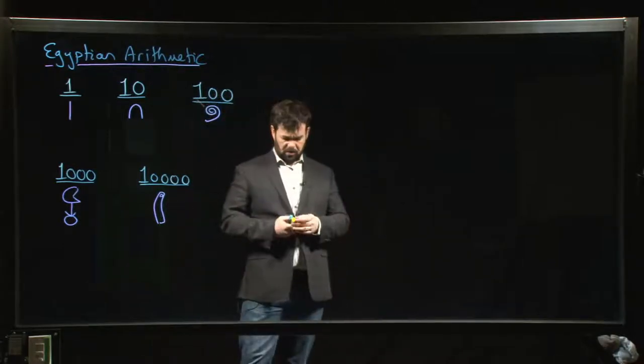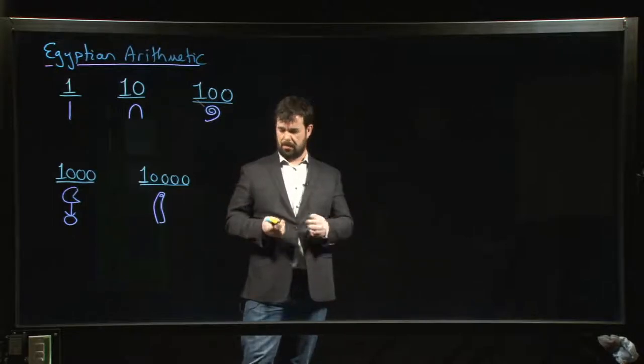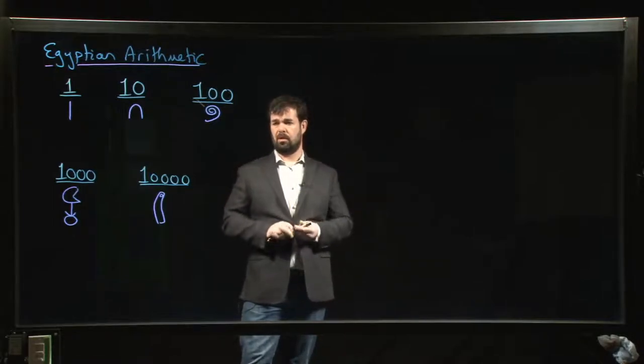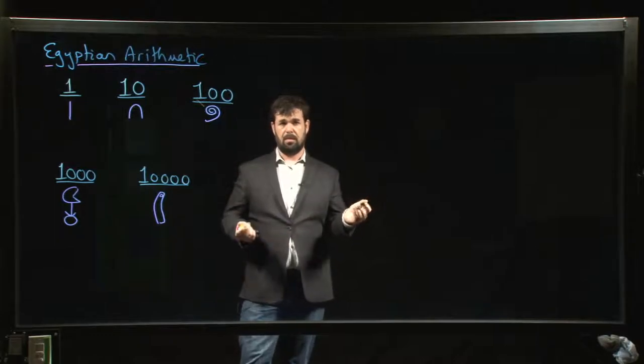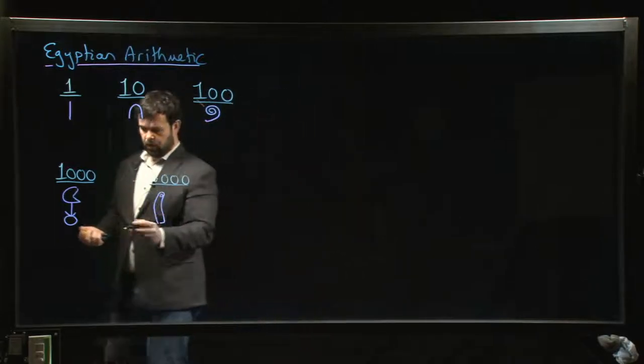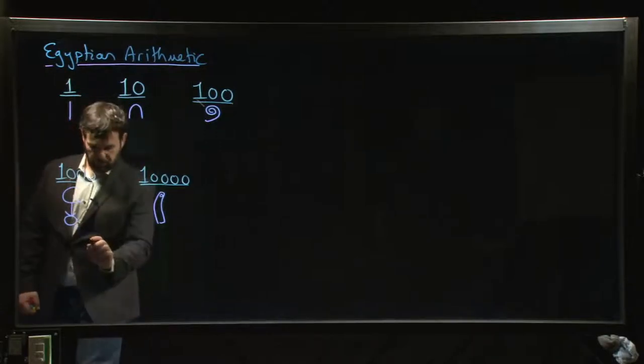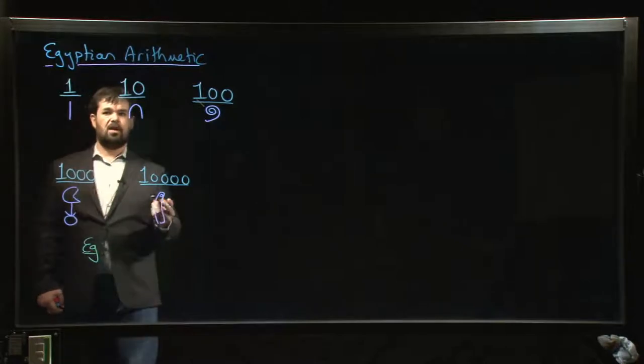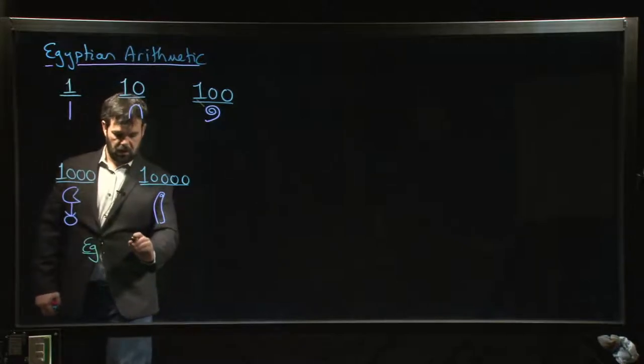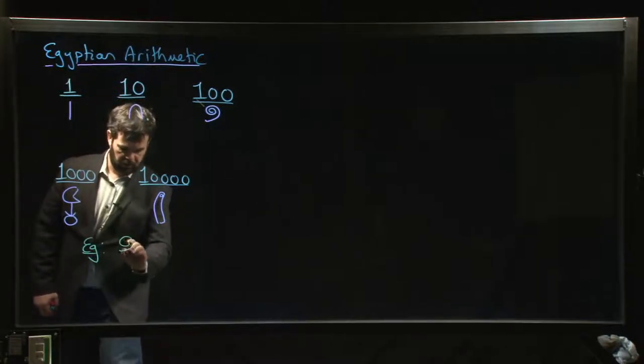In class we went over some of the basics like how to represent numbers in this system. Some things are pretty simple and basic. The way they write down their numbers is just by counting up the number of each symbol. Just as an example, if you saw something like this...